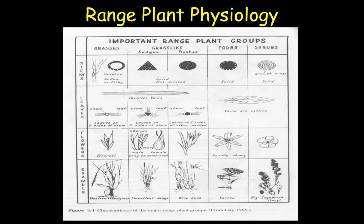And finally, our shrub group are going to be our woody stem plants. They are going to accumulate mass and tissue, just like a tree does, and they're going to actually develop growth rings with each new year of growth.